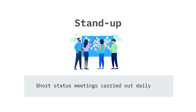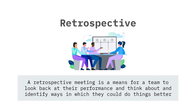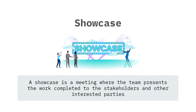The fourth practice is stand-ups, which are short status meetings carried out daily. They answer questions such as: what have you completed since the last stand-up? What will you complete by the next stand-up? And what are the blockers keeping you from successfully completing tasks? A retrospective meeting is a means for a team to look back at their performance and identify ways in which they could do things better. Finally, we have showcase meetings where the team presents completed work to stakeholders and other interested parties. This obtains feedback for moving forward and guides the team on what to prioritise, what to temporarily set aside, and what to remove from the backlog.